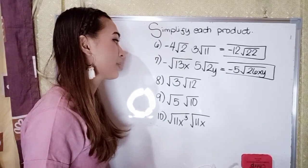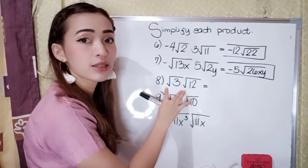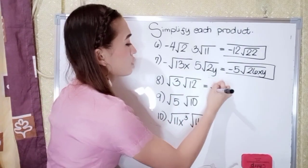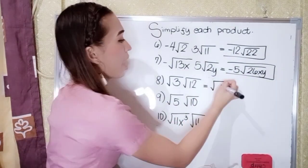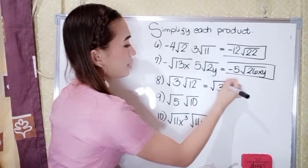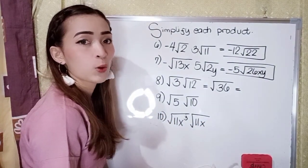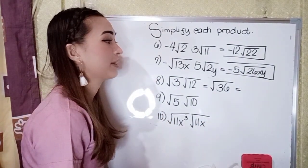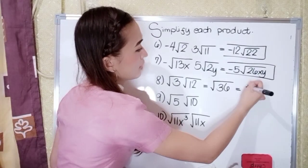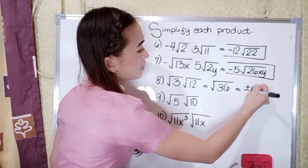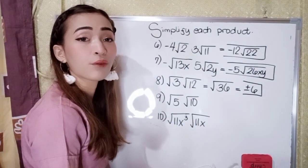For number eight, there are no numerical coefficients, just the radicands. Multiply the radicands: three times twelve is thirty-six. Since thirty-six is a perfect square, we simplify: the square root of thirty-six is positive or negative six. So that is the answer for number eight.